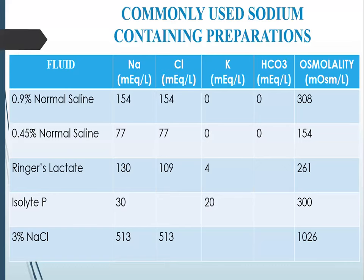Starting with the sodium-containing preparations, the commonly used ones are 0.9% normal saline, 0.45% normal saline, Ringer's lactate, Isolyte P, and 3% NaCl. 0.9% normal saline has 154 milliequivalents per litre of sodium and 154 milliequivalents per litre of chloride, with an osmolality of 308 milliosmol per litre.